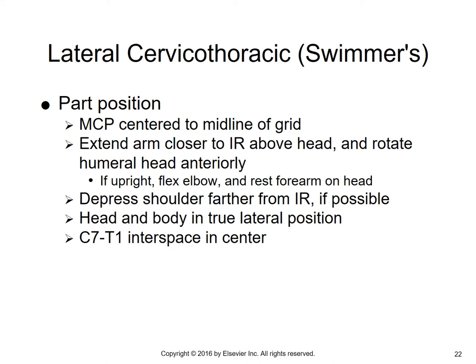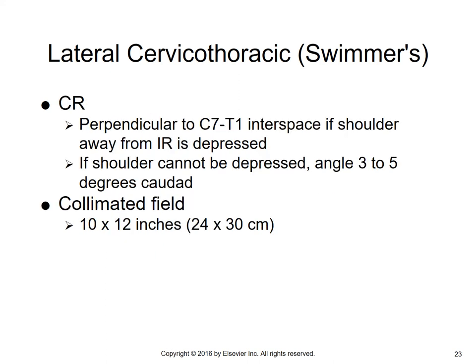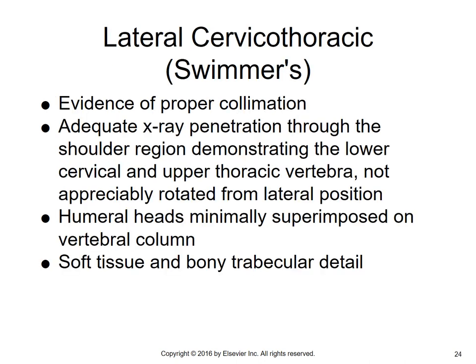You should see the C7-T1 interspace in the center of your image. The central ray is perpendicular to the C7-T1 interspace if the shoulder away from the IR is depressed. If the shoulder cannot be depressed, angle three to five degrees in a caudal direction. Use a 10 by 12 inch collimated field. You want evidence of proper collimation, adequate penetration through the shoulder region demonstrating lower cervical and upper thoracic vertebrae, not appreciably rotated from the lateral position, with humeral heads minimally superimposed on the vertebral column.